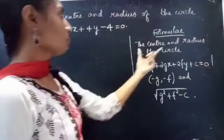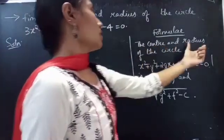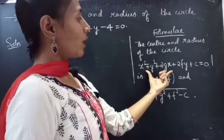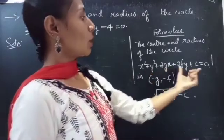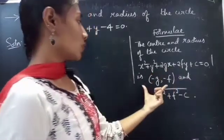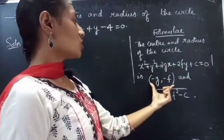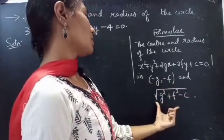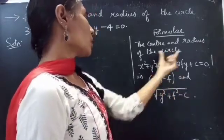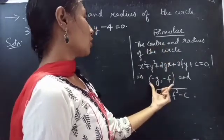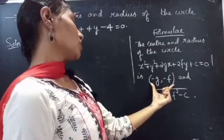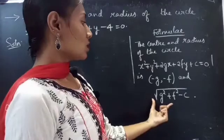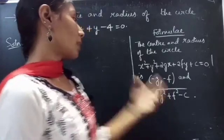We are having the formula. The center and radius of the circle x squared plus y squared plus 2gx plus 2fy plus c equals to 0 is: center = (minus g, minus f) and radius = square root of g squared plus f squared minus c.